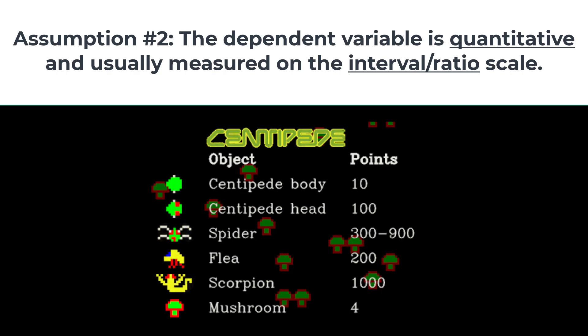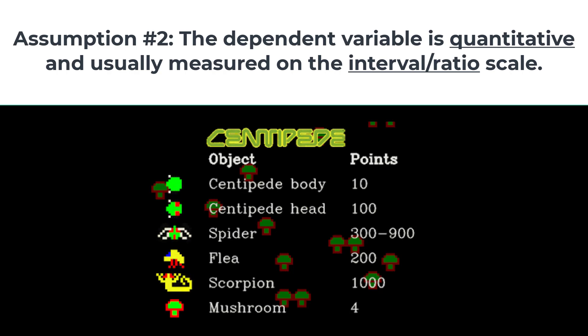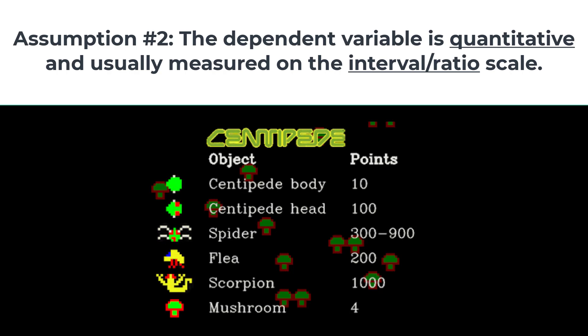Hitting the head increases the score by 100 points. The T-Test does not work with data that are qualitatively different, such as a measure of different eye colors.